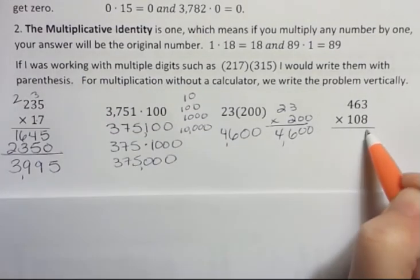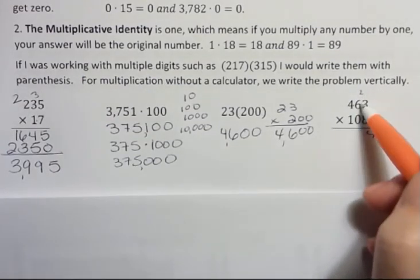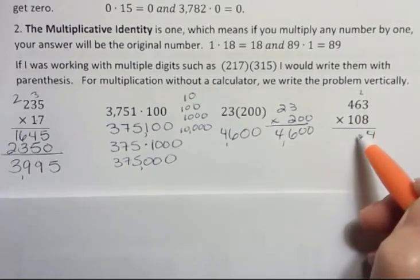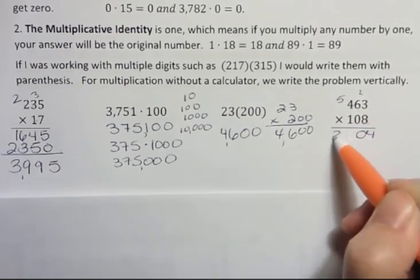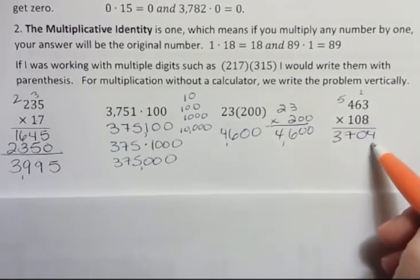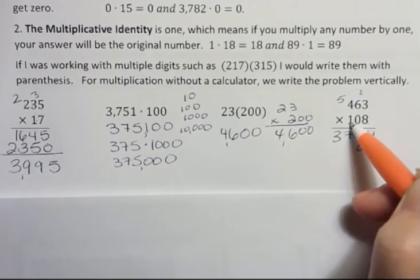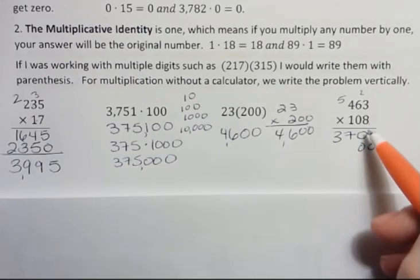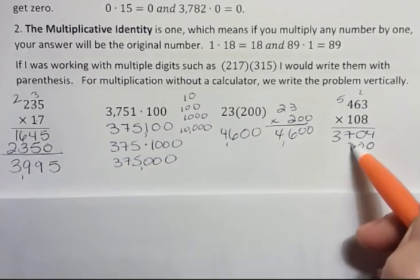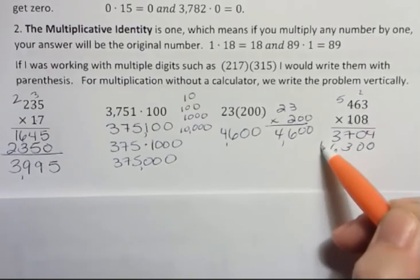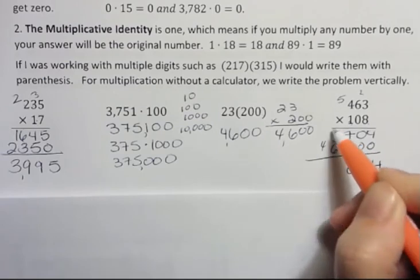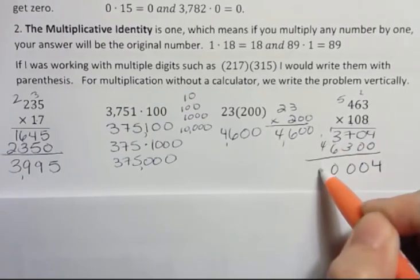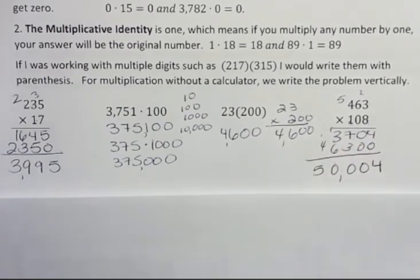Alright, one more. 3 times 8 is 24. Carry the 2. 6 times 8 is 48 plus 2 is 50. 4 times 8 is 32 plus 5 is 37. Notice I have a zero here. I could write a row of zeros, but instead I'm just going to put two zeros and then go ahead and do this number. So 1 times 3 is 3, 1 times 6 and 1 times 4. And then I'm going to add that together. 4, 0, 10, 10, and 5. 50,004.